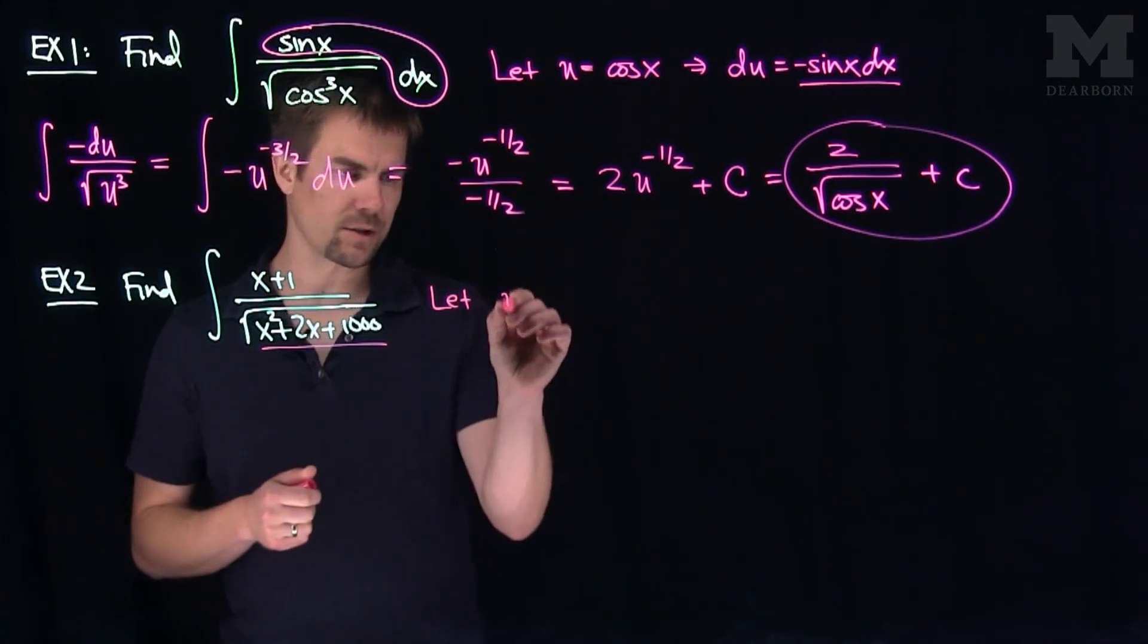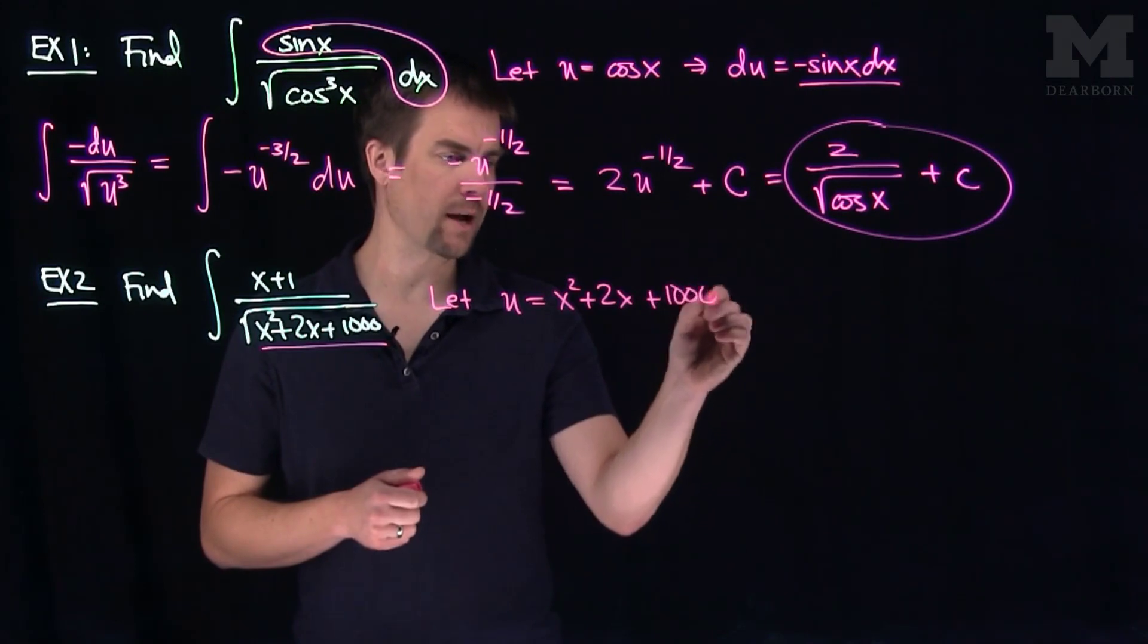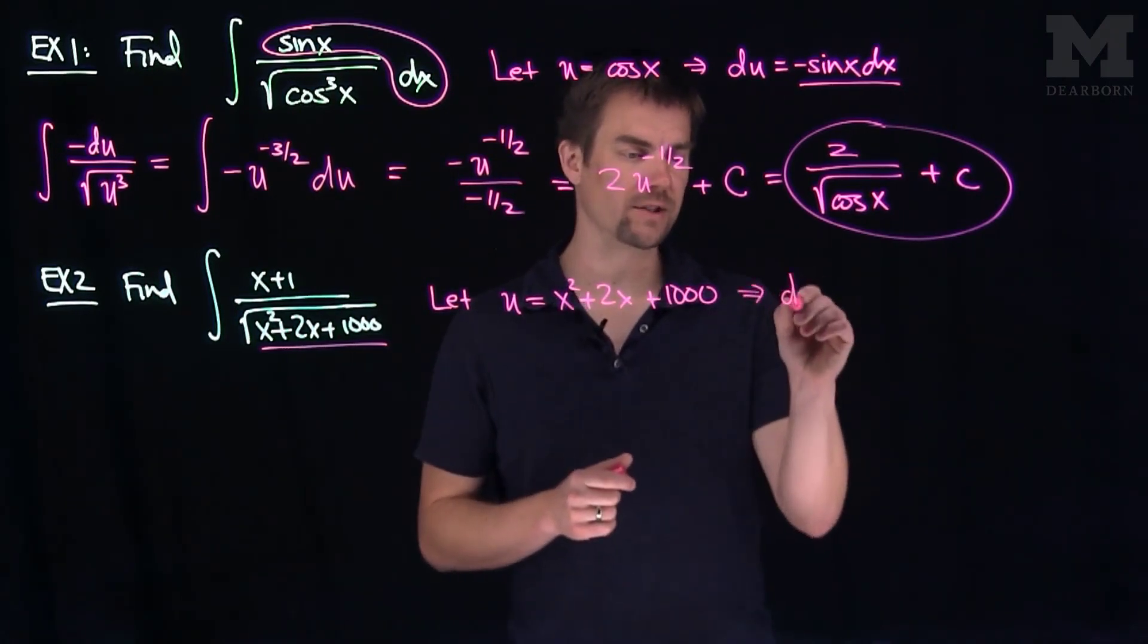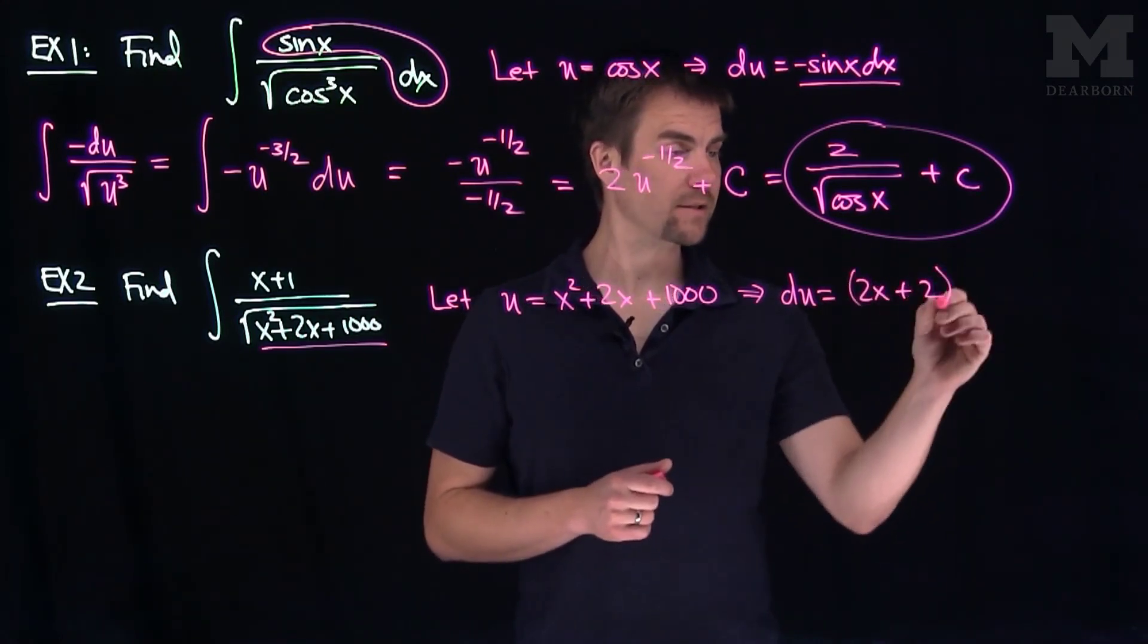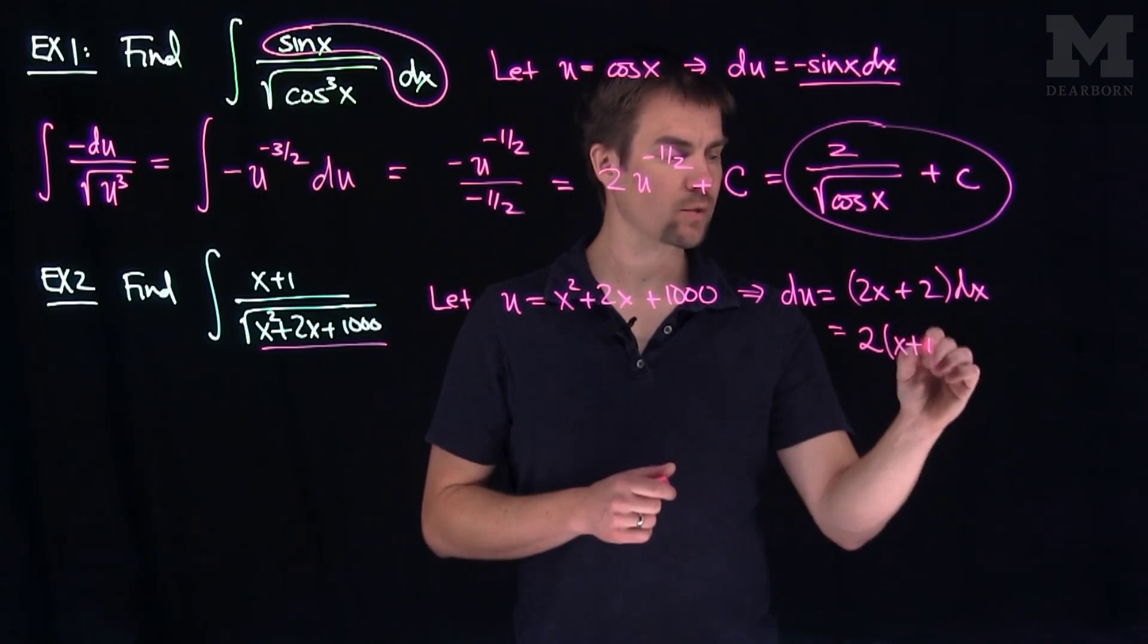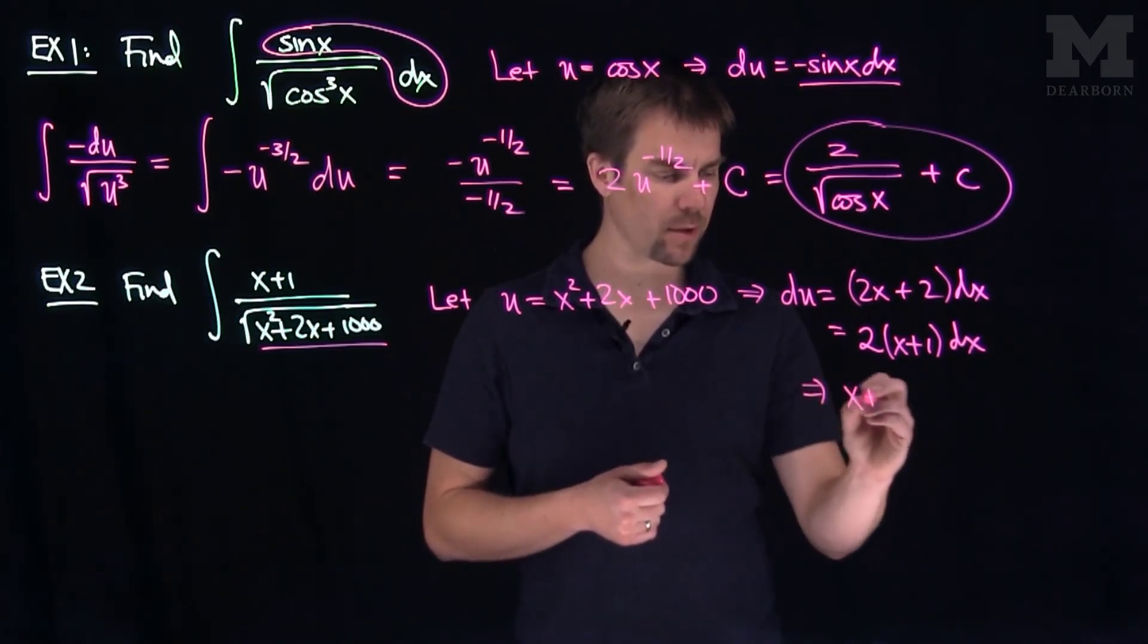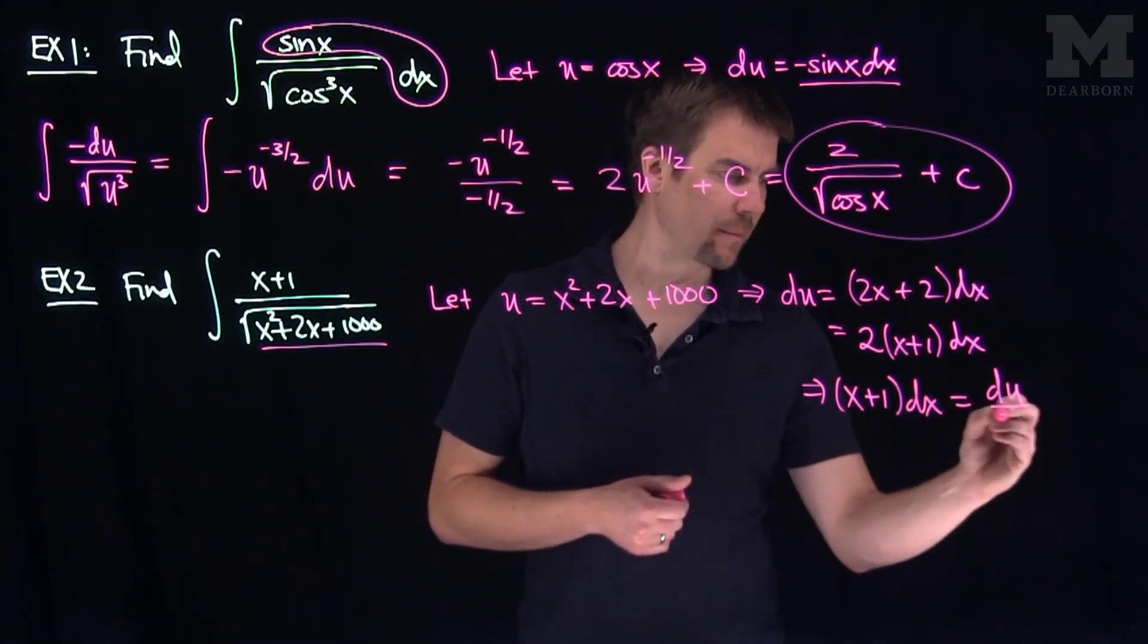If we let u be x squared plus 2x plus 1000, the 1000 doesn't really matter so much in this problem because when I do the derivative of u with respect to x, we can conclude that du will be 2x plus 2 dx, or the same thing as 2 times x plus 1 dx. This allows us to solve for x plus 1 dx. This tells us that x plus 1 dx is really just du divided by 2.